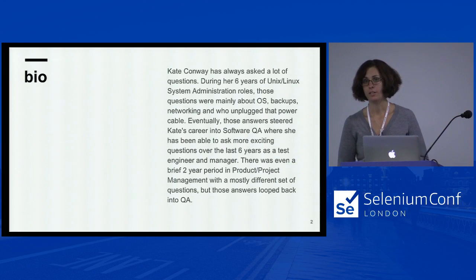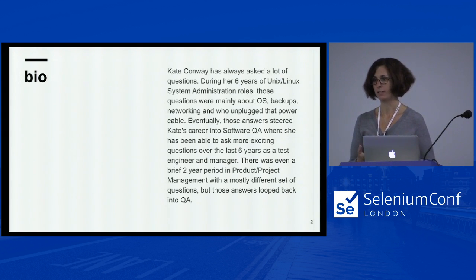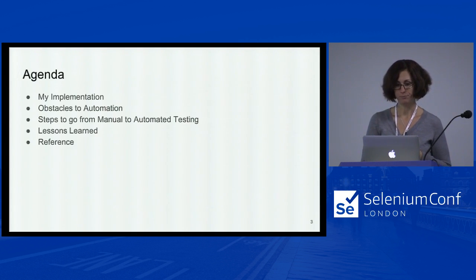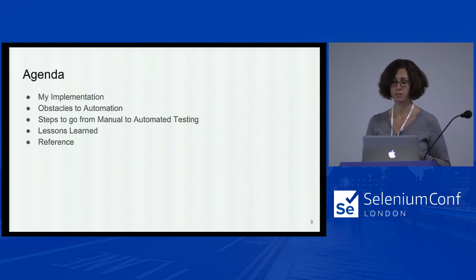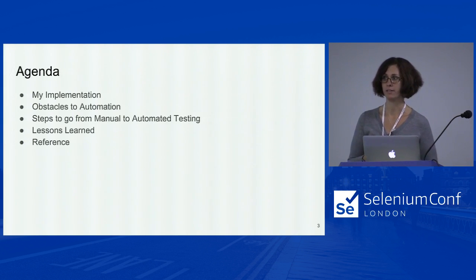I started off in technology as a Unix and Linux system administrator. I did that for just about seven years and then moved over to the software QA space. There were a lot of similarities, but I really liked asking a lot of questions and software QA was just the right fit for me. We're going to talk about what I've already implemented, the obstacles in general, general steps to go from manual to automated testing, some painful lessons learned, and some hopefully helpful lessons learned. In this slide deck there's a reference section with helpful links if you are looking to set up your own automation.